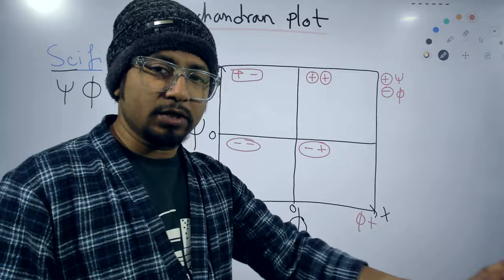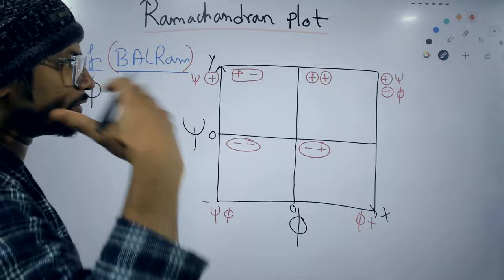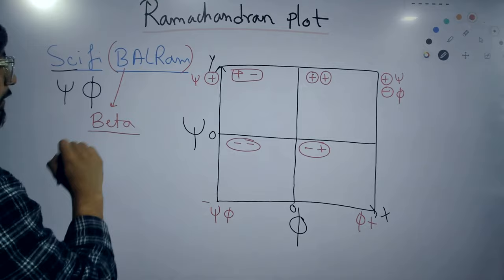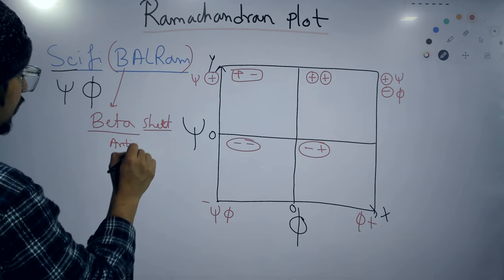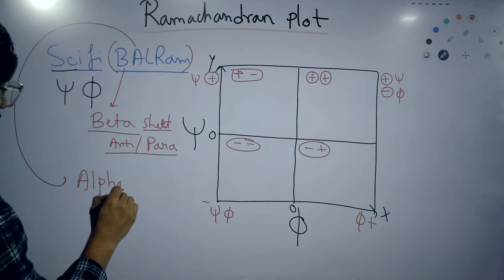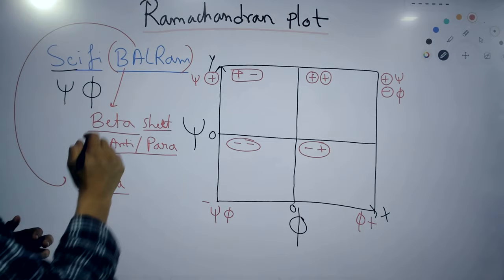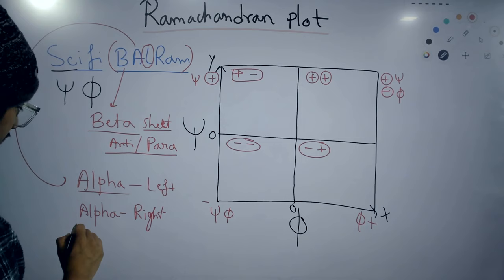Balram — what do we mean by Balram? B stands for beta, meaning beta sheet — either anti-parallel or parallel, any kind of beta sheet is possible for B. Then comes A for alpha helix. The alpha helix can be of different types: left-handed or right-handed. That's why you have L for left-handed alpha helix. And the next letter represents alpha helix for the right-handed. So we have alpha helix left-handed first, then right-handed.